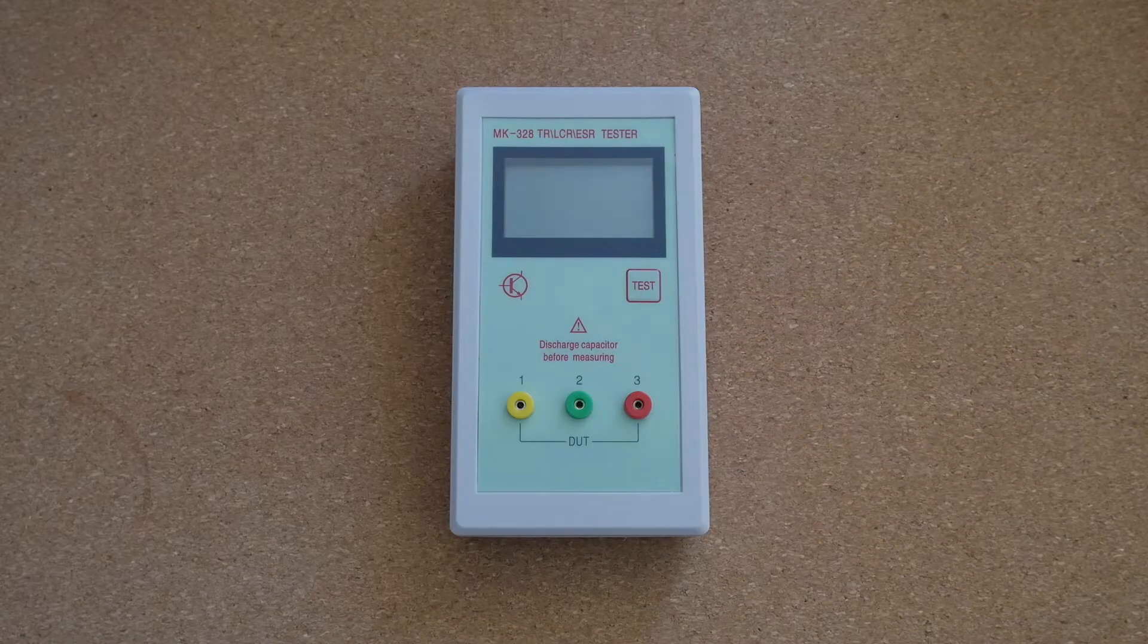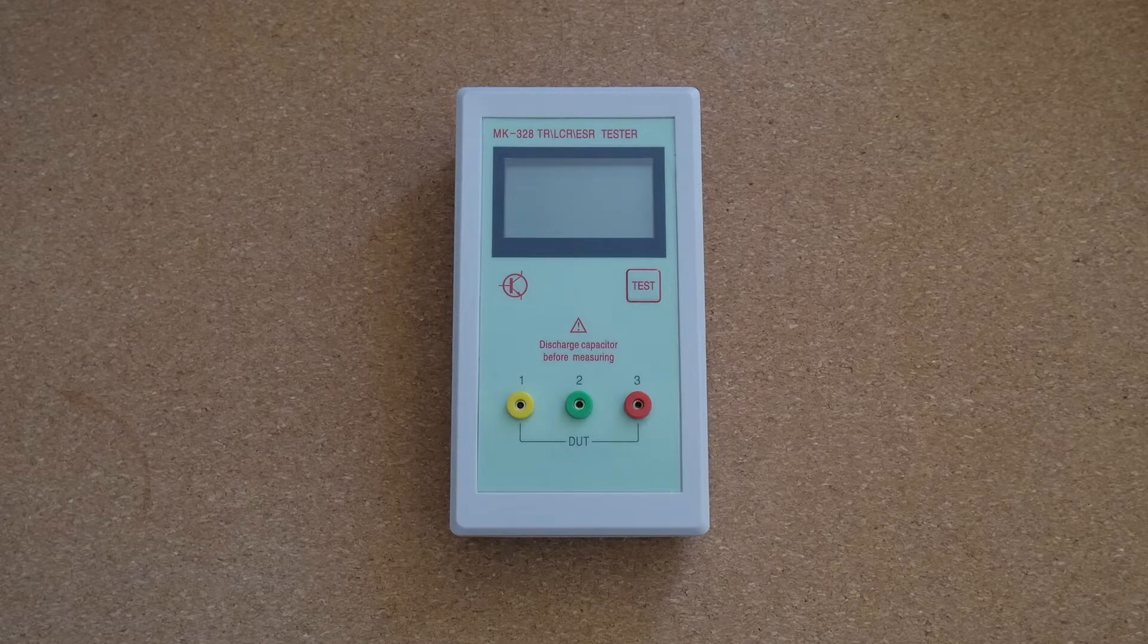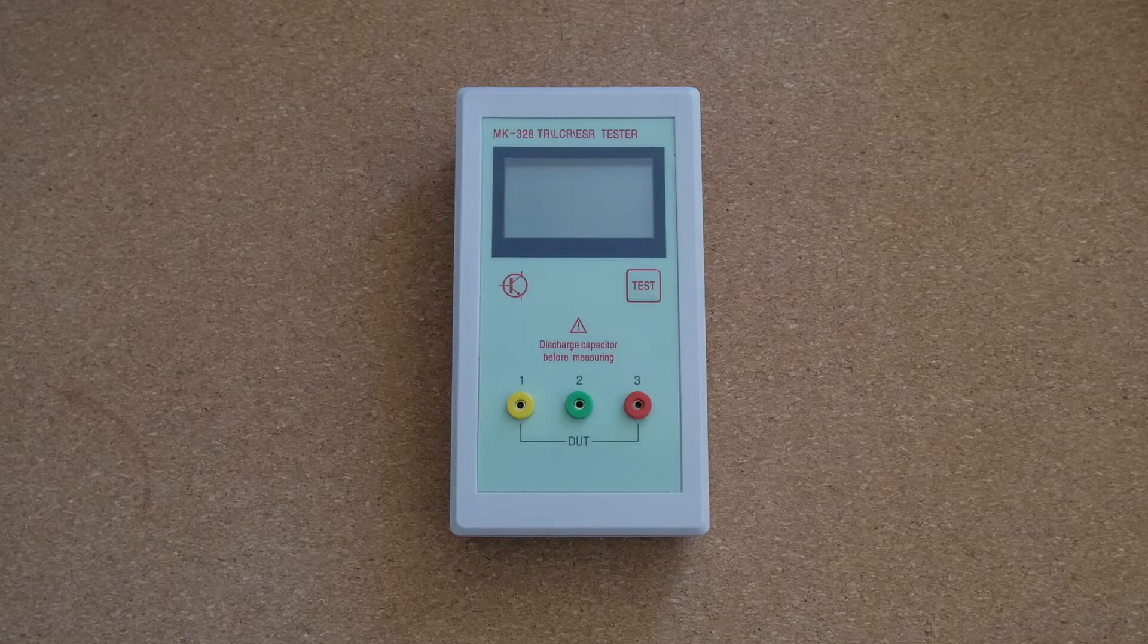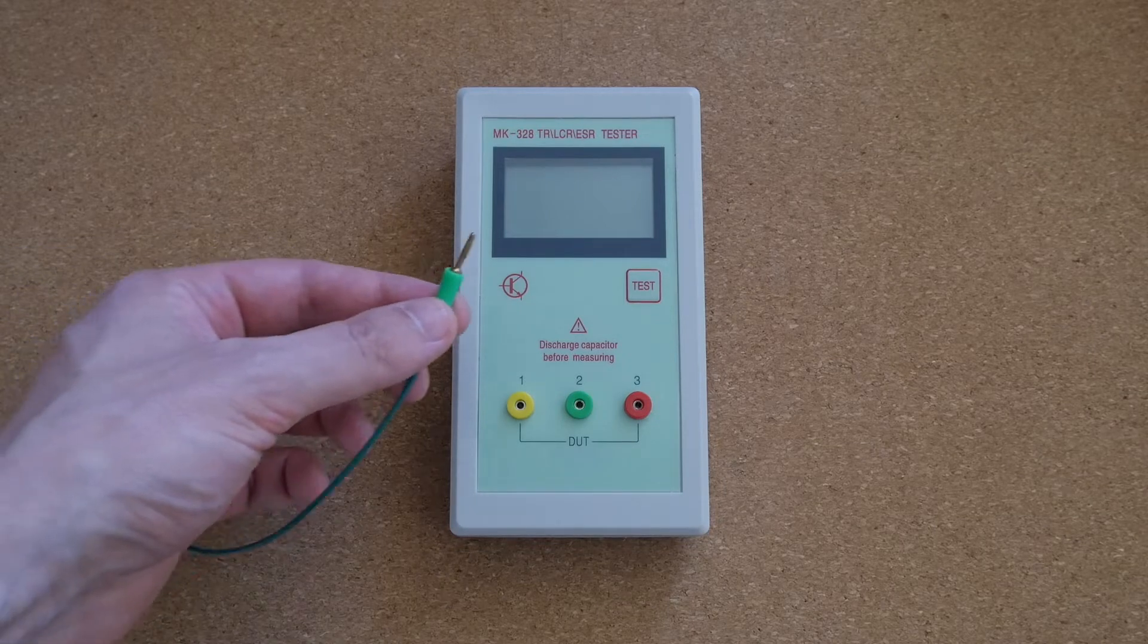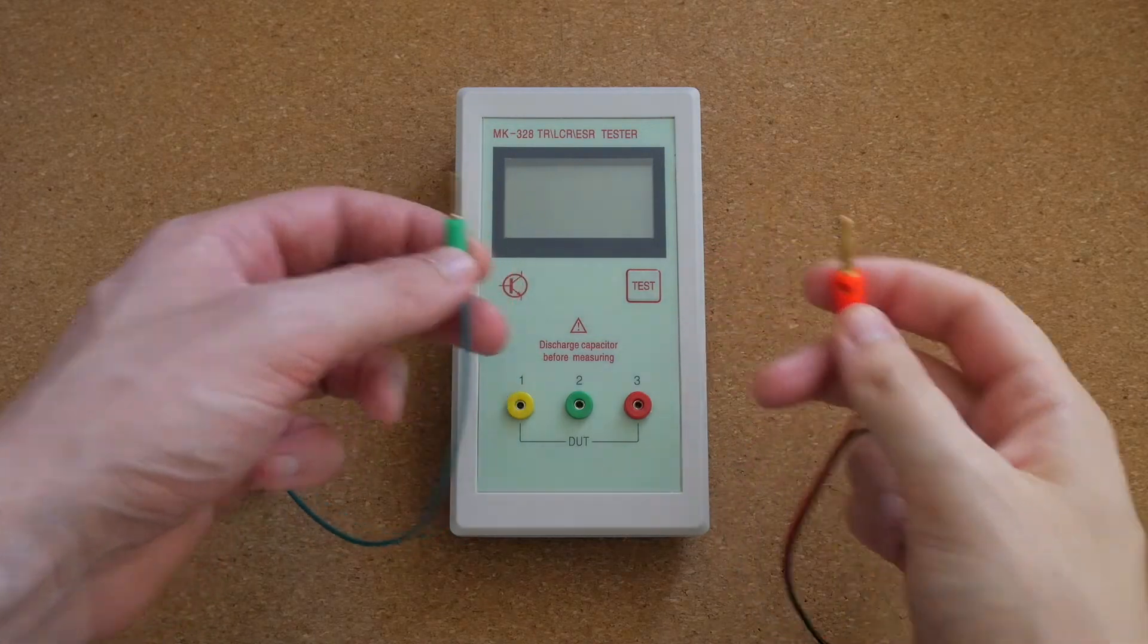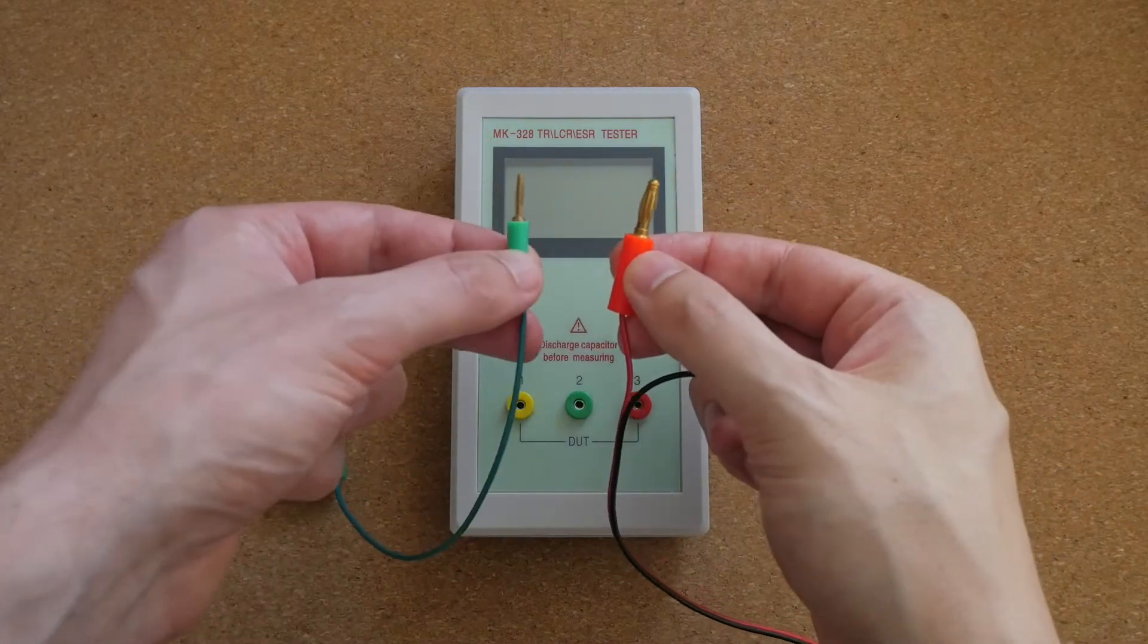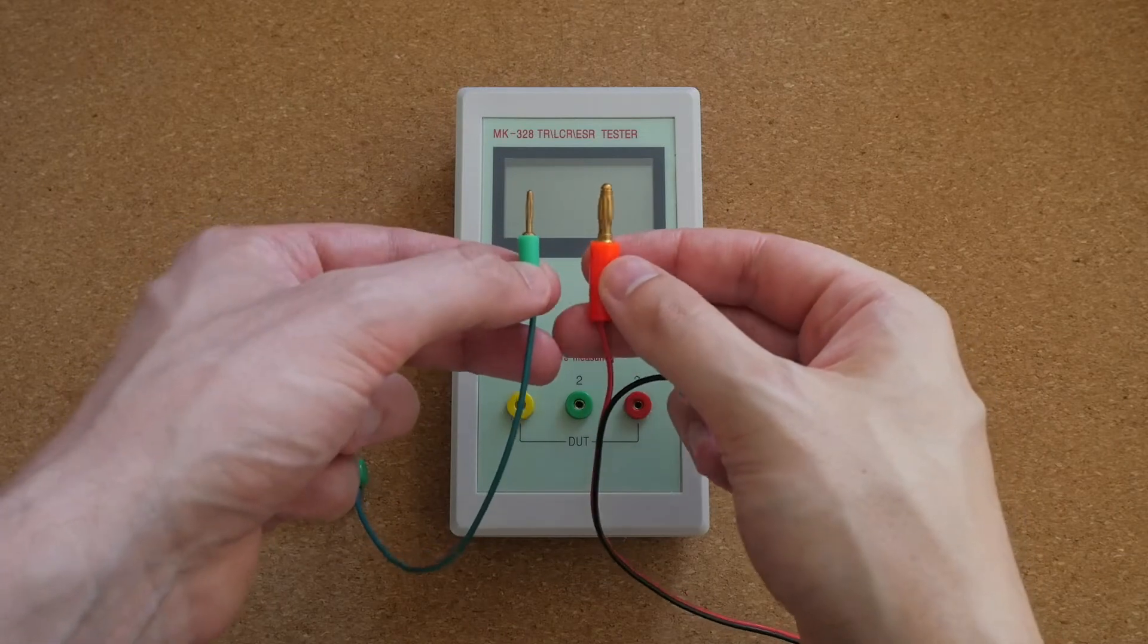When I first saw this component tester I thought that it used regular banana plugs to connect test leads, but unfortunately they are so-called mini banana plugs. Here you can see a regular banana plug on the right and a mini banana plug is on the left. It is quite a bit smaller than regular banana plugs.